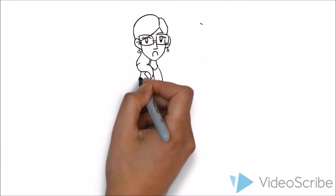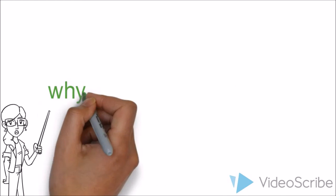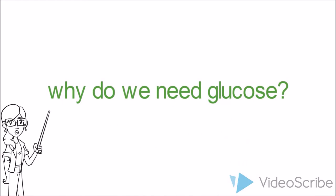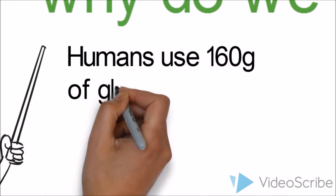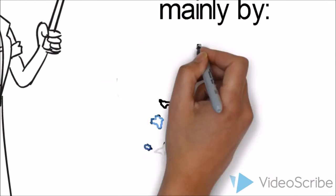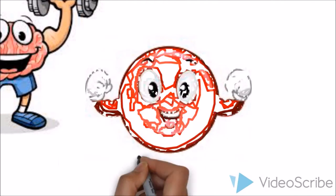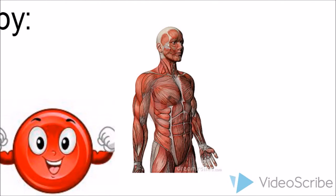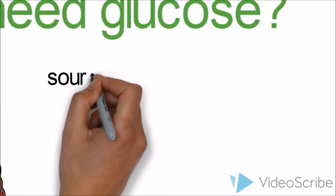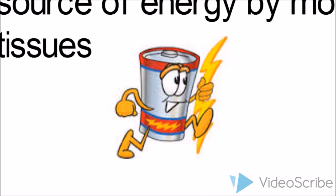We need glucose because humans use 160 grams of glucose per day, mainly by our brain, red blood cells, and muscles. Glucose is also used as a source of energy by most tissues in the body.